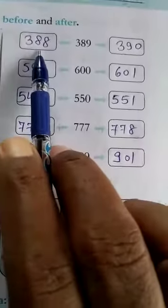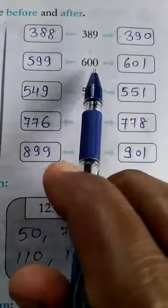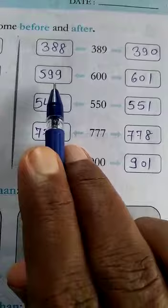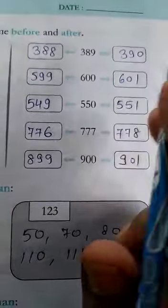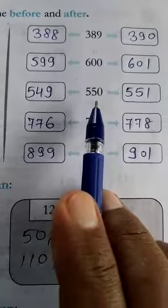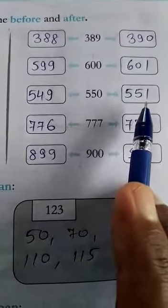389. Before is 388 and after is 390. 600. Before number is 599 and after number is 601. 550. Before is 549, after is 551.